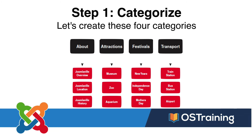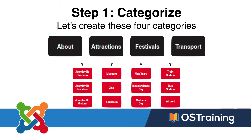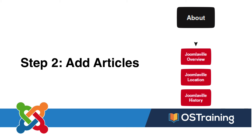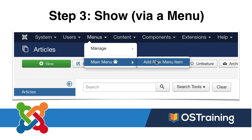The first step then is to categorize, and as I've mentioned earlier, we've done the planning for you. We're going to create four categories: About, Attractions, Festivals, and Transportation. In each category we're going to place three articles, and then finally we'll show all of these with a number of menu items, covering all the different kinds of menus you can use.